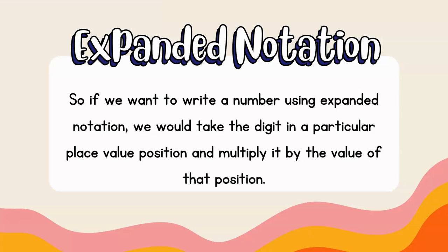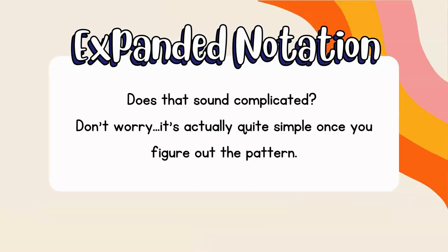So if we want to write a number using Expanded Notation, what we're going to do is take the digit that's in a particular place value position and multiply it by the value of that position. Does that sound complicated? I know that sounds like a lot, but don't worry — it's actually quite simple once you figure out the pattern. As in most things in math, there's a pattern to this.